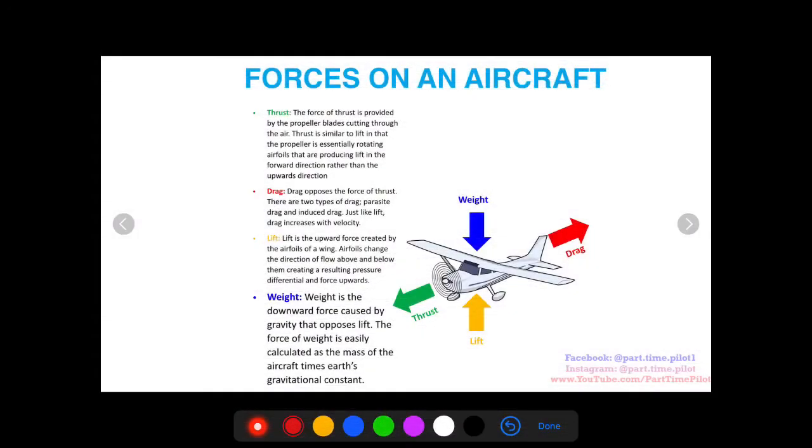The fourth and final force on an aircraft is weight. Weight is the downward force caused by gravity that opposes lift. So you got lift going up, fighting against the weight of the aircraft. The force of weight is easily calculated as the mass of the aircraft times Earth's gravitational constant. So we have a constant of gravity. It's always the same force keeping us bound to the Earth.